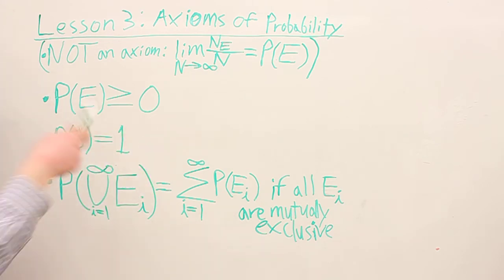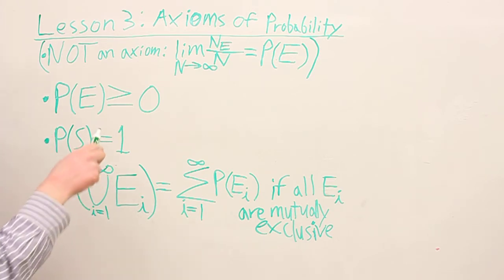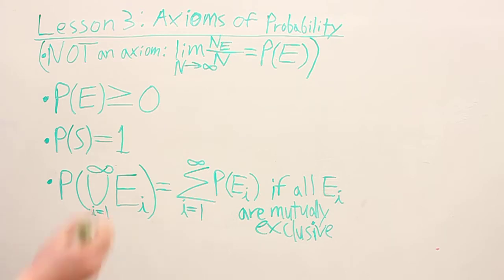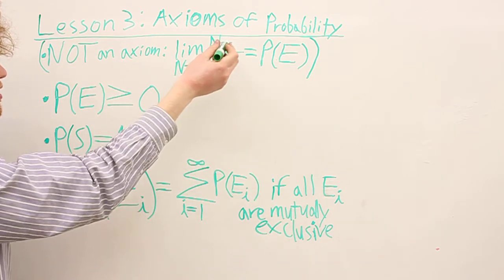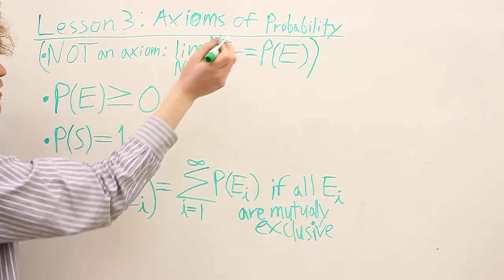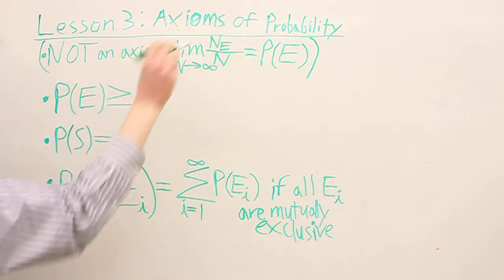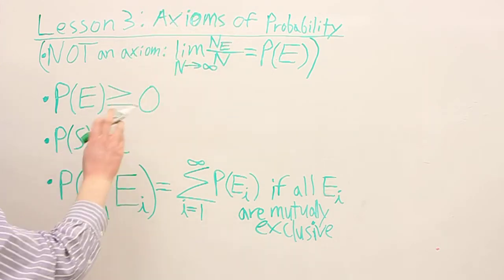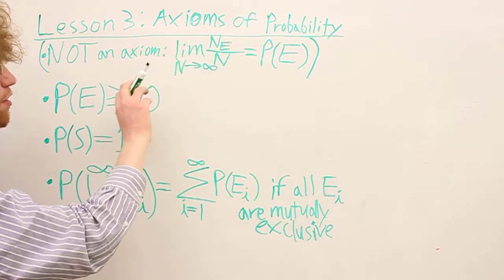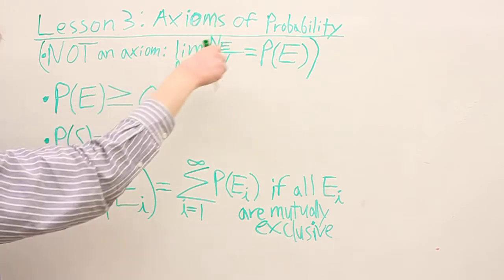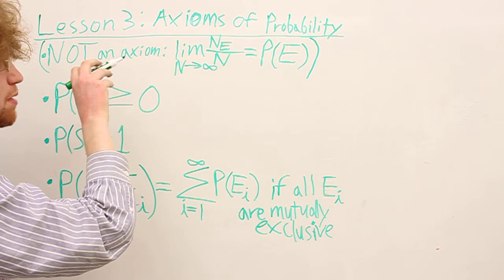The first axiom is that probabilities are non-negative. Let's think of why this makes sense. As you're counting the number of outcomes that are in a certain event, that's not going to be negative. That's going to be zero or positive. If you count the number of experiments that you do, that's also not going to be negative. So this fraction shouldn't be negative.